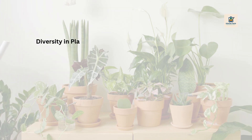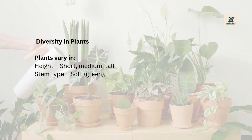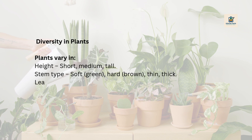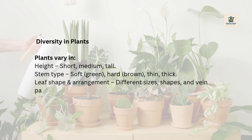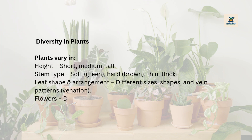Biodiversity in plants. Plants vary in height: short, medium, tall. Stem type: soft, green, hard, brown, thin, thick. Leaf shape and arrangement: different sizes, shapes, and vein patterns (venation). Flowers: different colors, shapes, and scents.